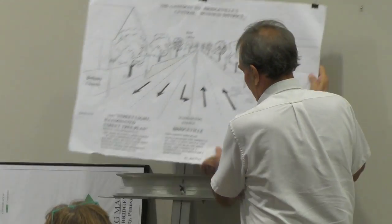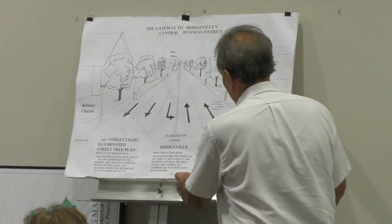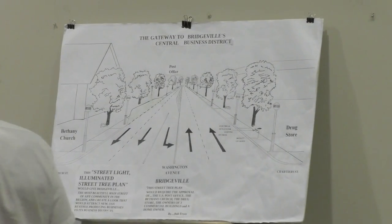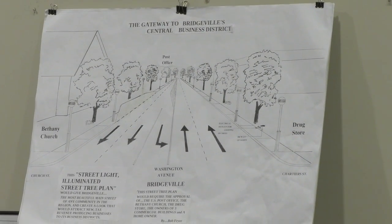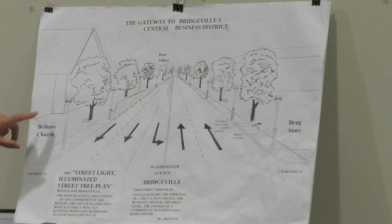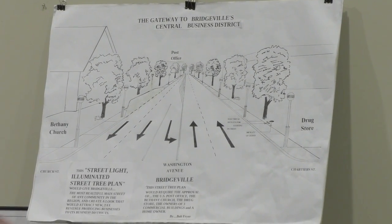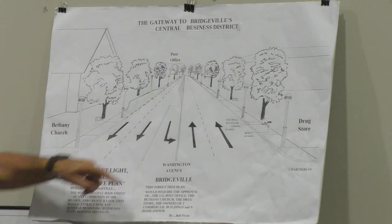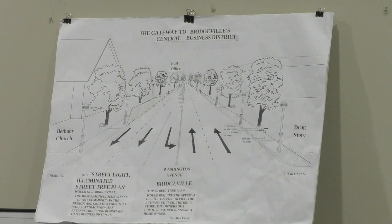This is a drawing that I presented to you in the last meeting. The bridge is right here. This is the Bethany Church. That's the drugstore on the right, with the left-turn stacking line of considerable importance to it. This is the gateway to the personal business system.